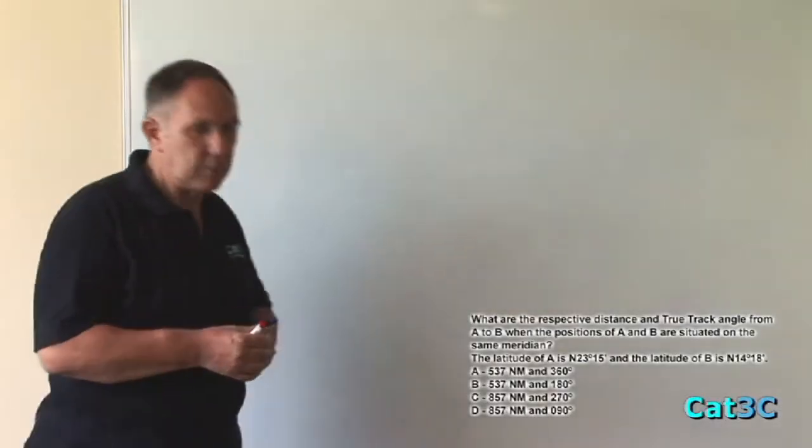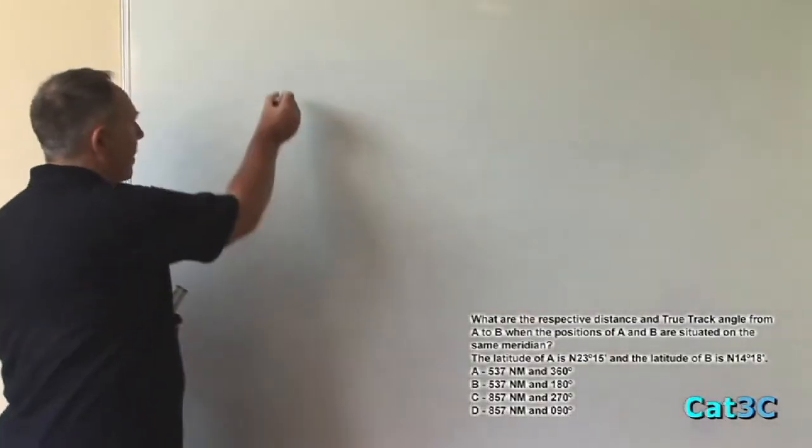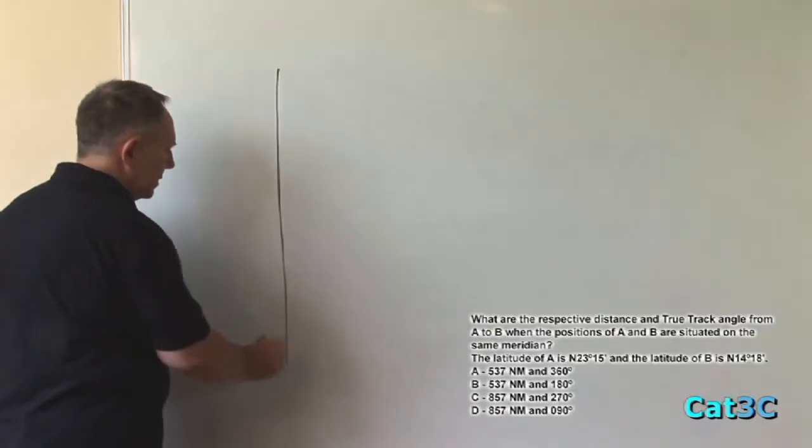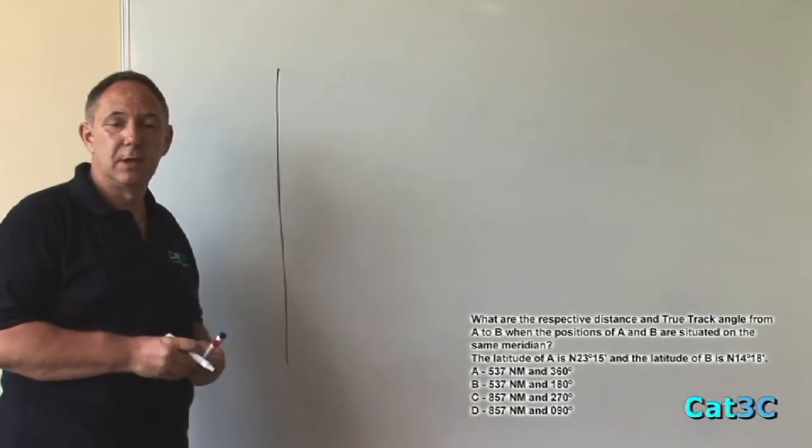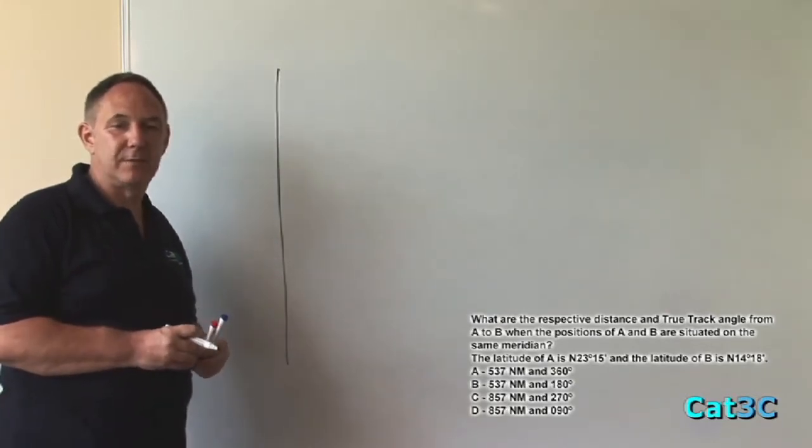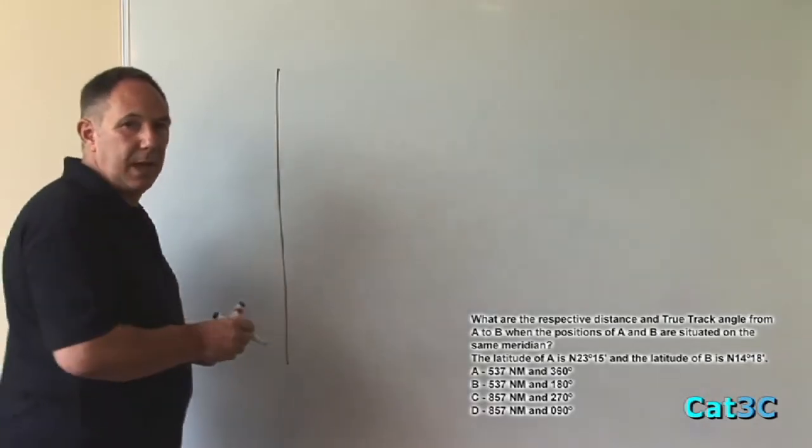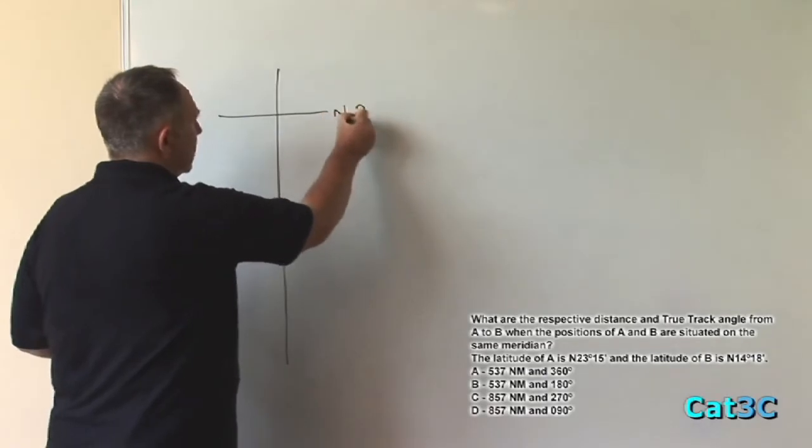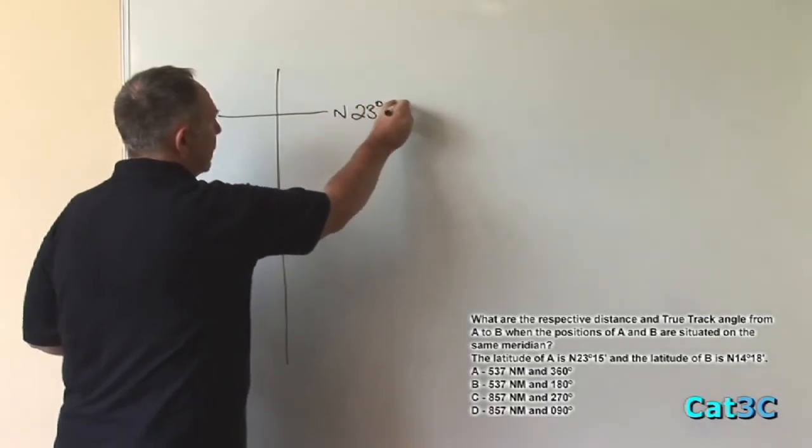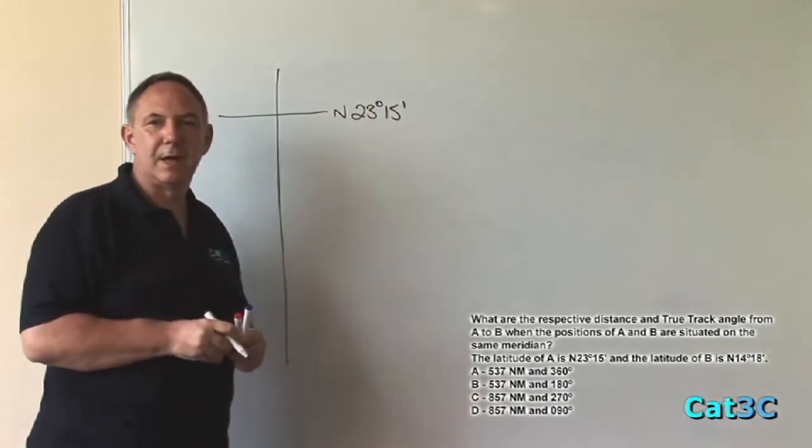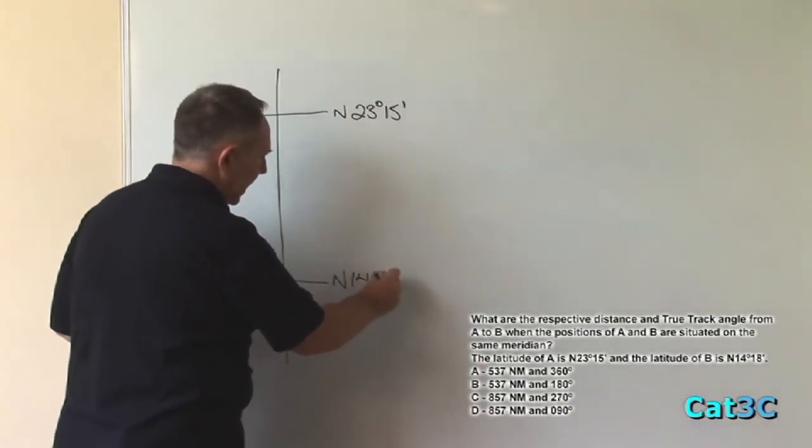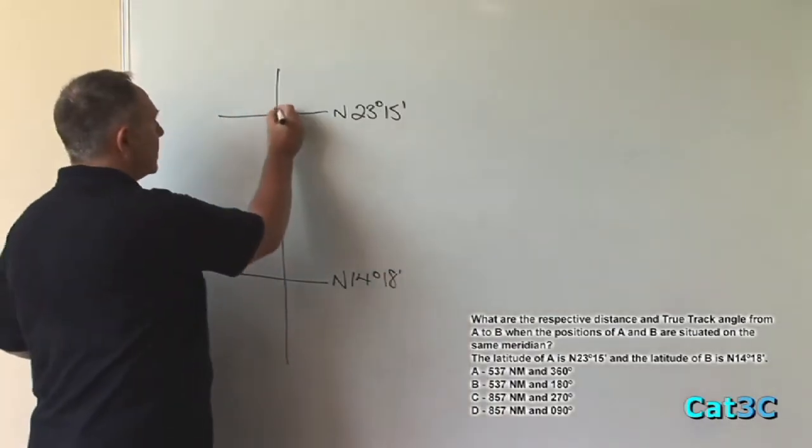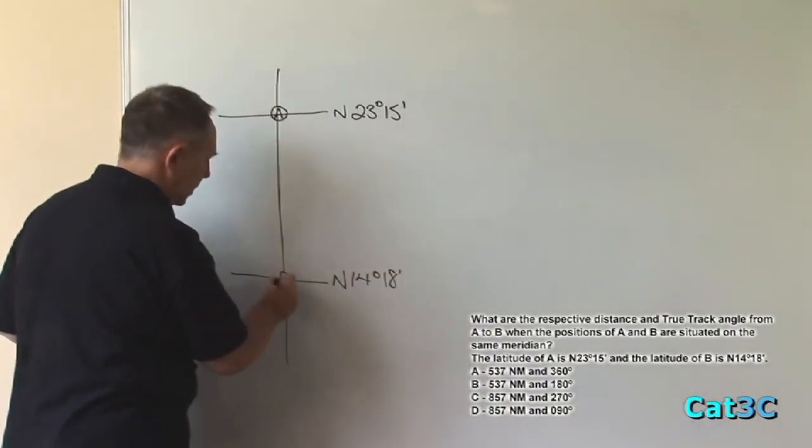Well, we know that both A and B are on the same meridian. So we can represent that meridian by a straight vertical line and it makes absolutely no difference what the value is. In fact, we're not told. What we do know is that A and B respectively are two latitudes which intersect that meridian. A is at north 23 degrees 15 minutes and B is at north 14 degrees 18 minutes. Position A, position B.